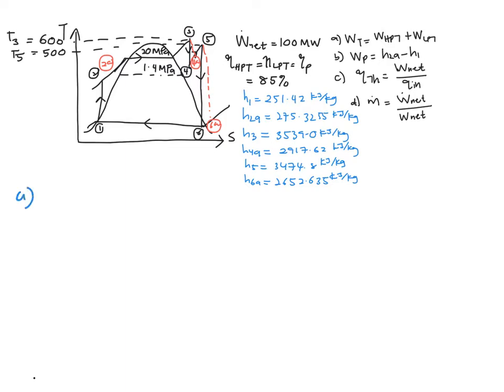So you have A is to find the work of your turbine. So you are going to consider your high pressure turbine, state 3 and 4A, and low pressure turbine, state 5 and 6A.